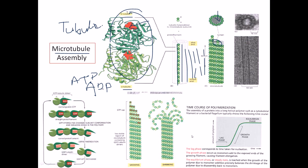This tube - the microtubule - is made up of tubulin dimer proteins arranged throughout different sheets made of alpha and beta tubulin aligned one by one in strands. We will see how this arrangement is done in a future slide with animation, which will make the concept much clearer.